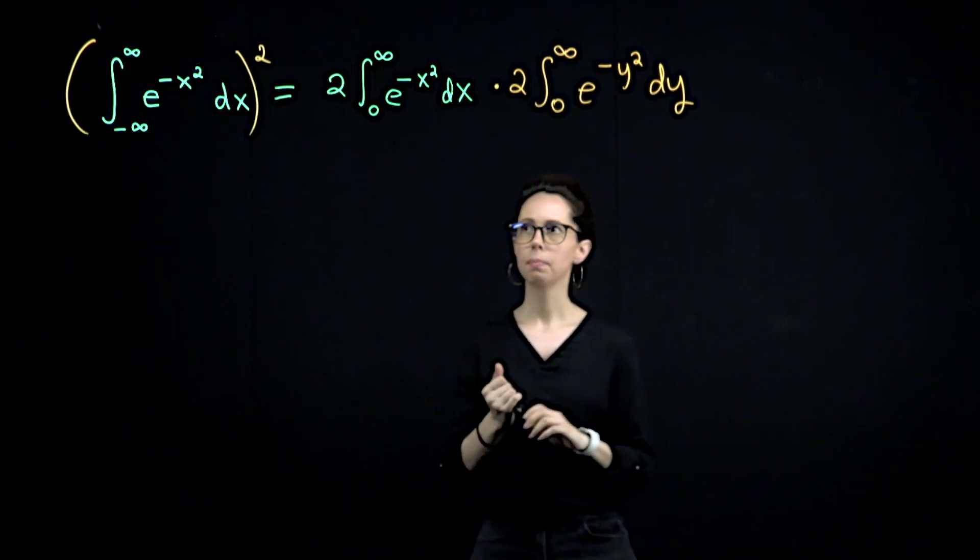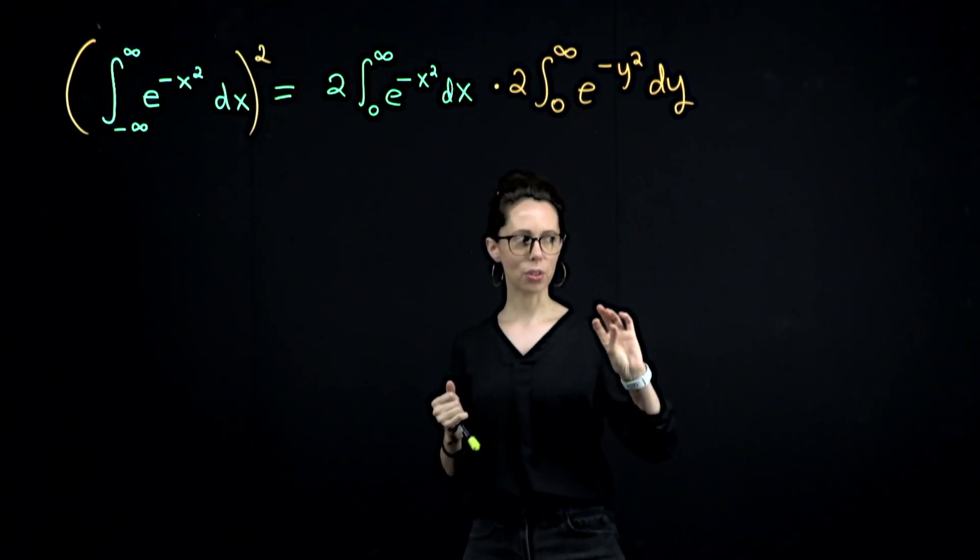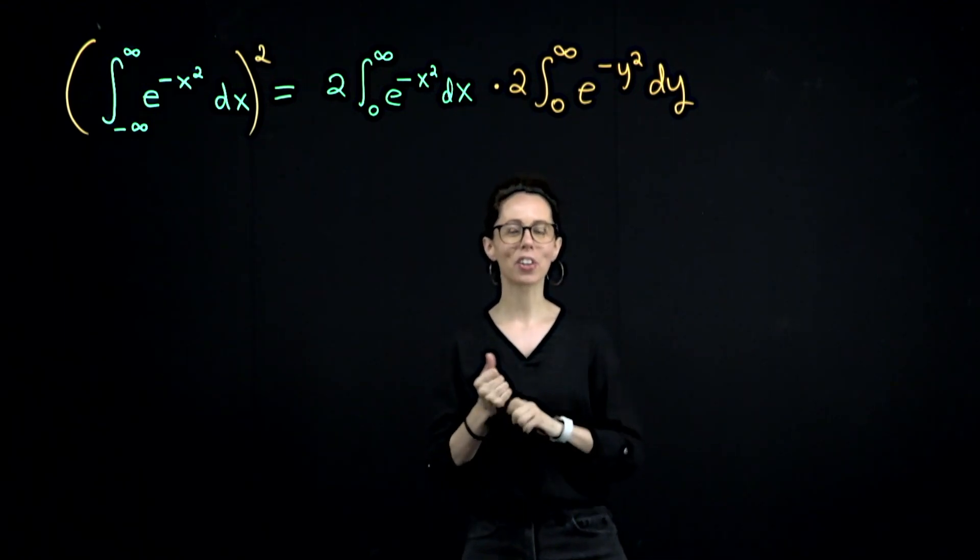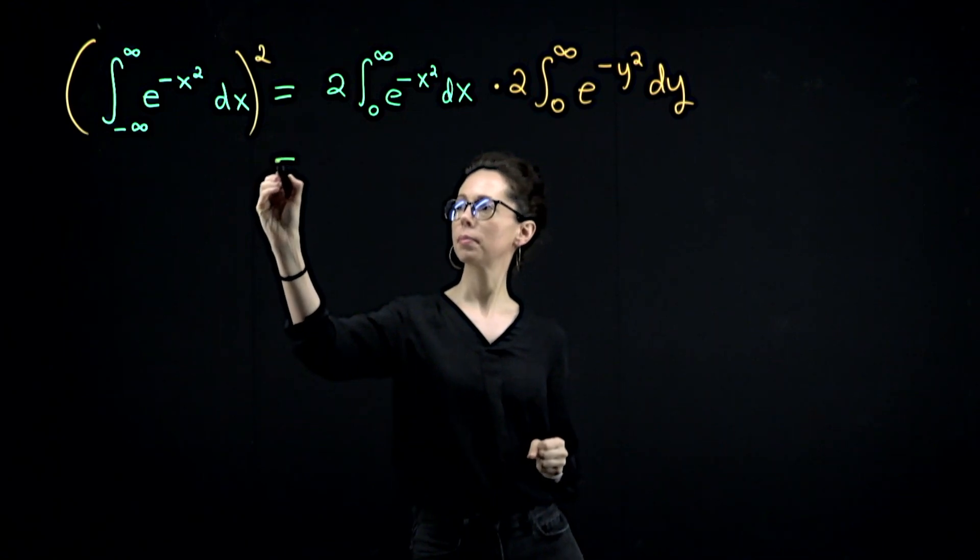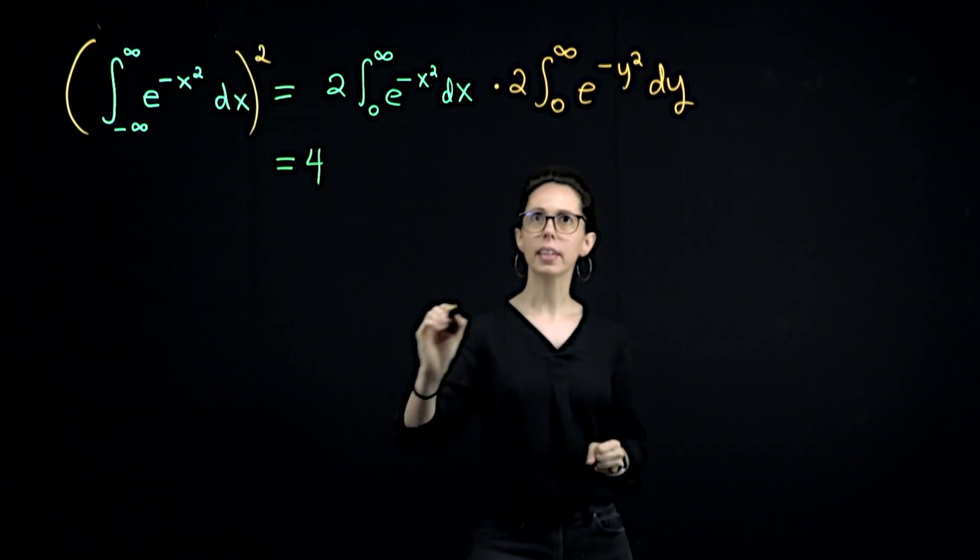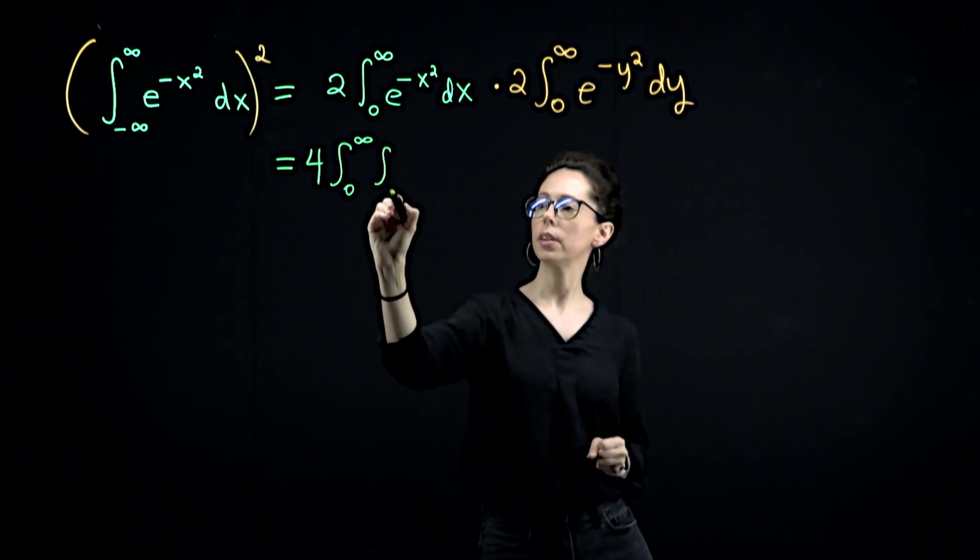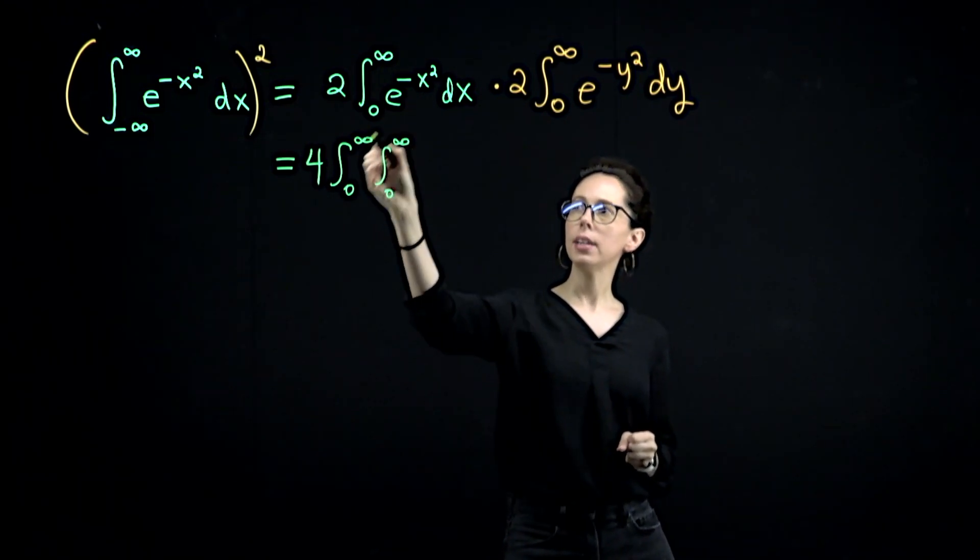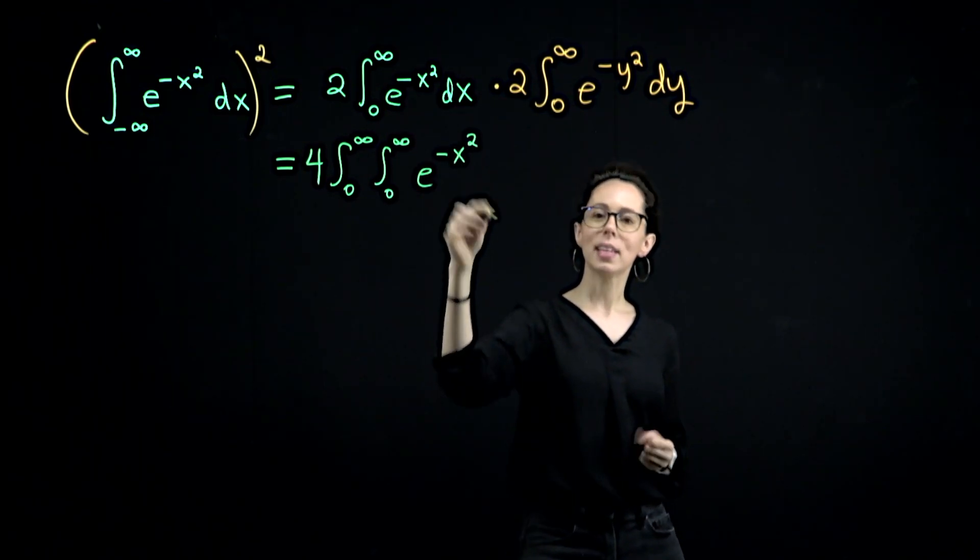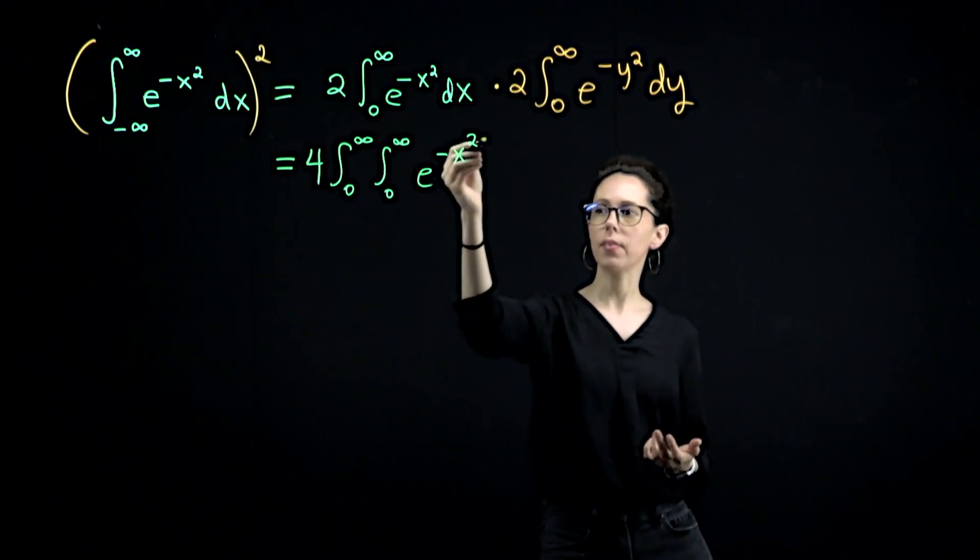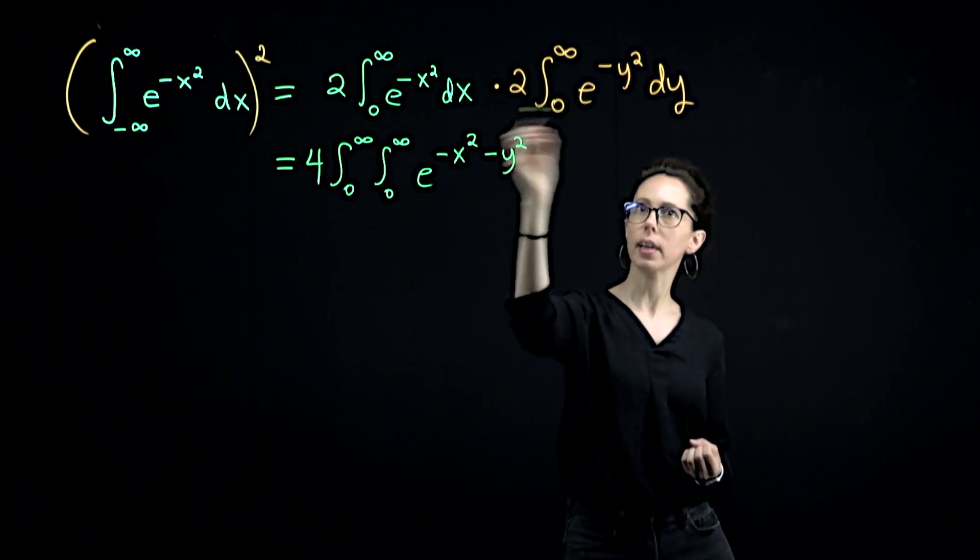Let me do that. And I will stick with the infinite bounds for now. And then we will switch into how to set it up as a proper improper integral as you also had to really do this correctly. So two times two is four. And then sticking with the infinite bounds, I'm going to write this as four times zero to infinity, zero to infinity, e to the negative x squared times e to the negative y squared. But since that's a product of exponentials, e to the negative x squared times e to the negative y squared is really just e to the negative x squared minus y squared dx dy.